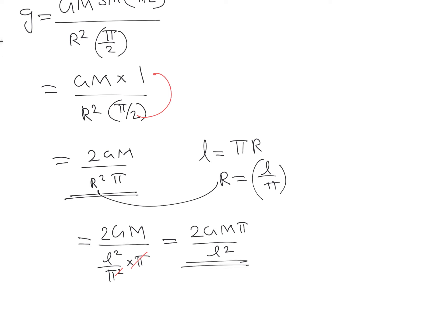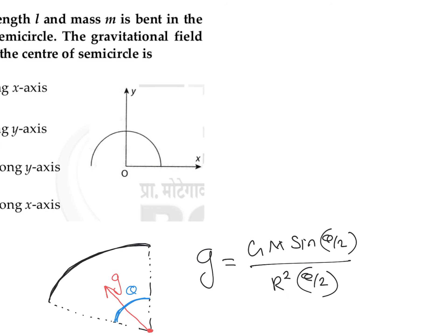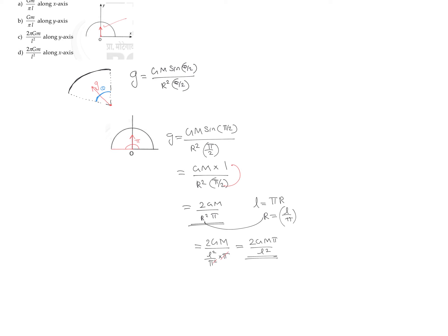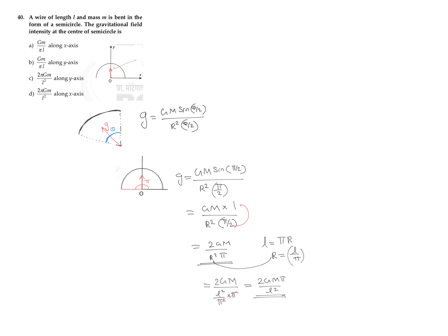For the direction of the gravitational field, it is always along the bisector line. Here the bisector line is along the y-axis, so the gravitational field direction is along the positive y-axis. The final answer is: gravitational field magnitude equals 2GMπ divided by L², directed along the positive y-axis.